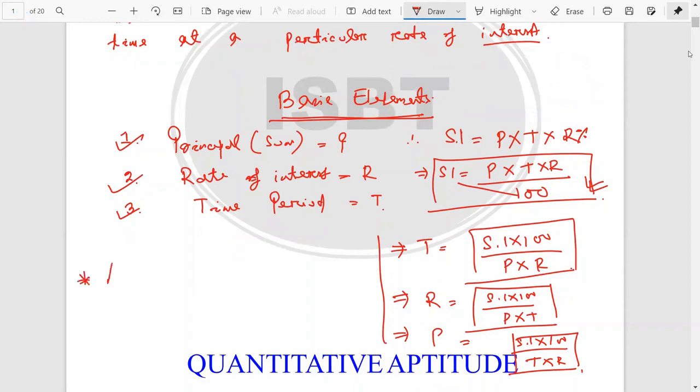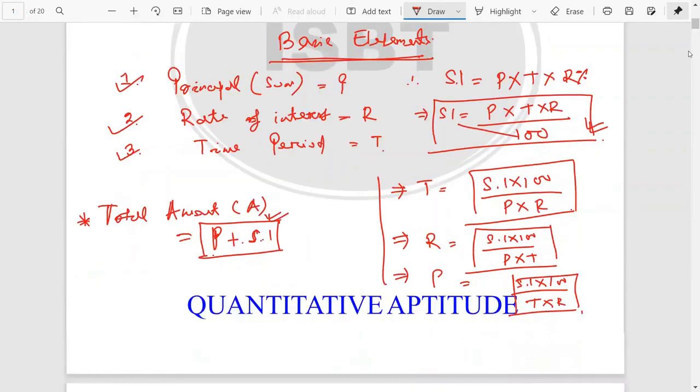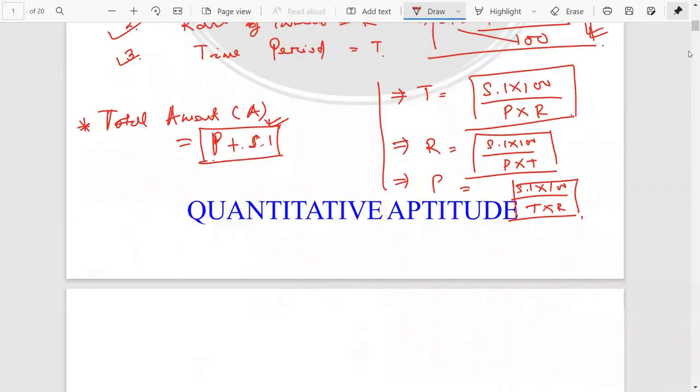That is Amount. Total Amount, let's denote as A, is equal to Principal plus Simple Interest. These are the basic formulas.